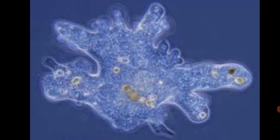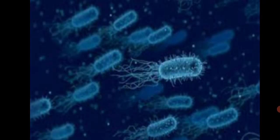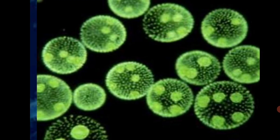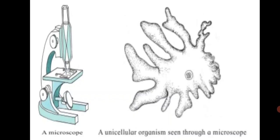It is believed that various kinds of unicellular organisms or living things first appeared in water. They are known as protozoa. Gradually, multicellular living things developed from the unicellular ones. The protozoa are so tiny that they cannot be seen with the naked eye, so we need a microscope to see them. In this image you can see a unicellular organism seen through a microscope.